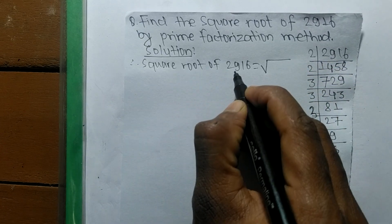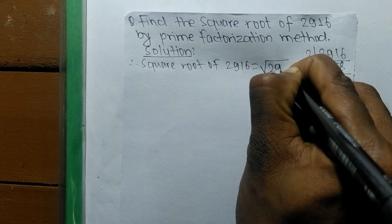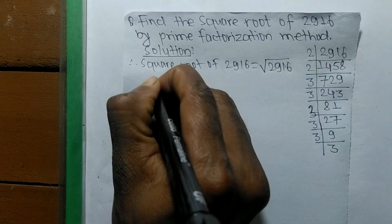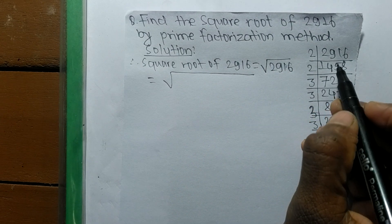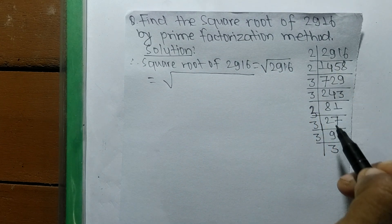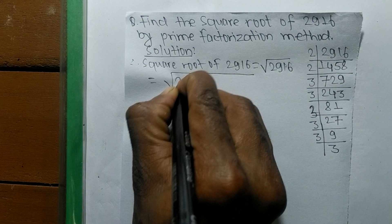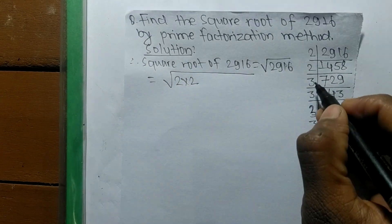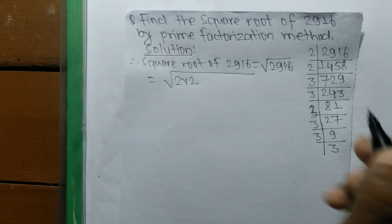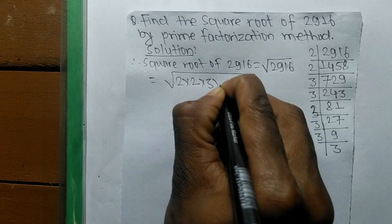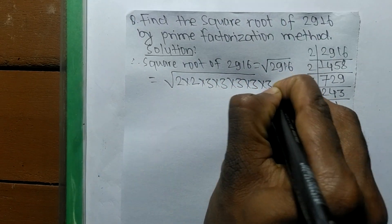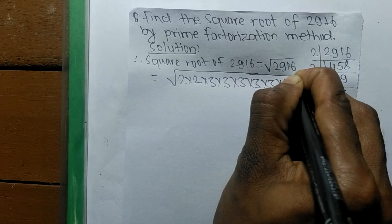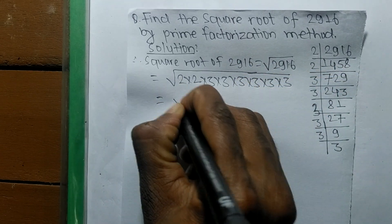We are finding the square root of 2916. So now we write the prime factors of 2916. So it is 2 times 2, 1, 2, 3, 4, 5, 6 times 2. So 1, 2, 3, 4, 5, 6 times 3.